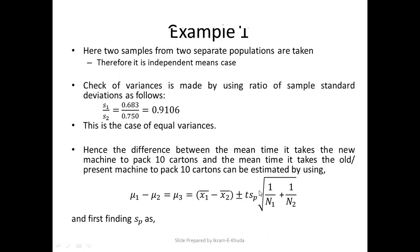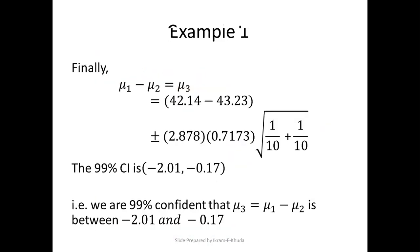We plug in the value of t which is 2.878, sp which is 0.7173, x1 bar which is 42.14, x2 bar which is 43.23, and n1 and n2 which are both 10. At the 99% confidence interval we see that the difference ranges from minus 2.01 to minus 0.17. That is, we are 99% confident that mu3, which is mu1 minus mu2, is between minus 2.01 and minus 0.17 seconds.